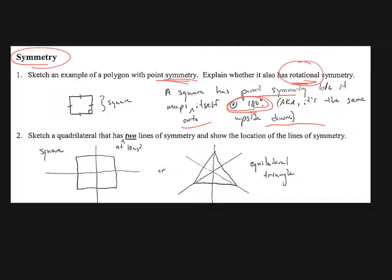Sketch a quadrilateral that has two lines, right, at least two lines of symmetry, and show the location of those lines. So I just gave two examples. There's two. It also has these diagonal ones. Here's a triangle. It's an equilateral triangle, and it has symmetry this way, this way, and this way. So at least two. So I gave two examples. So I went overboard on number two, but we're going to give Mr. Brecklin only half credit here as he has failed to handle the second part of this question. Whoops.